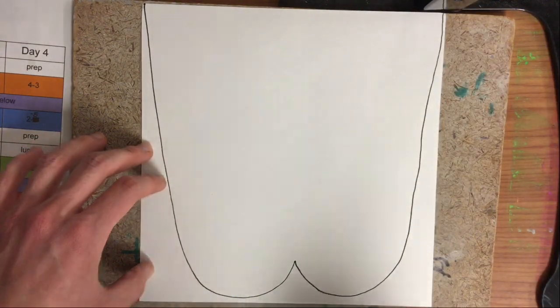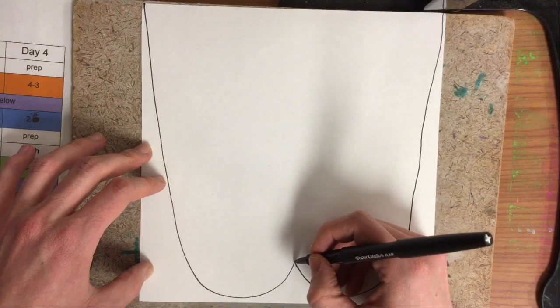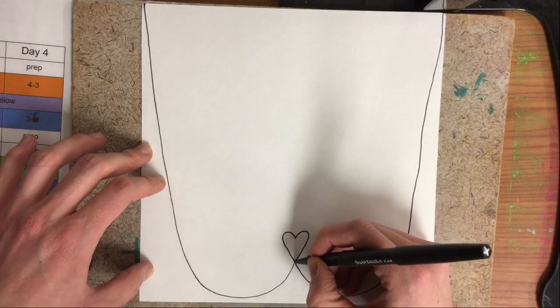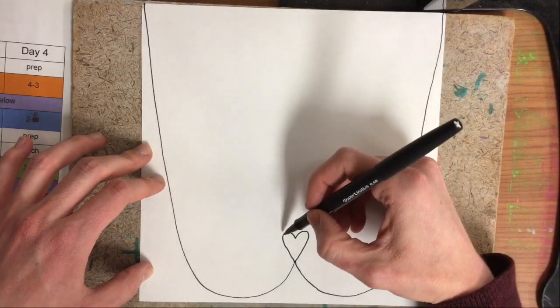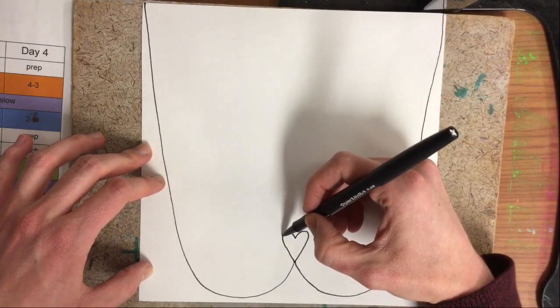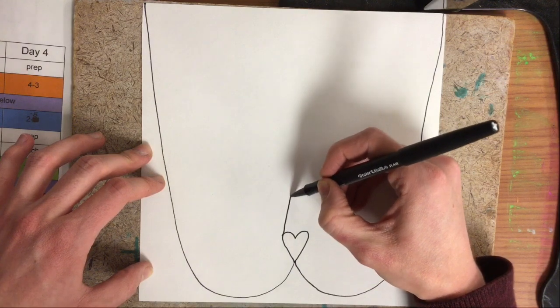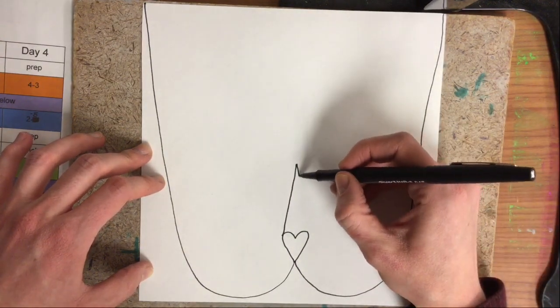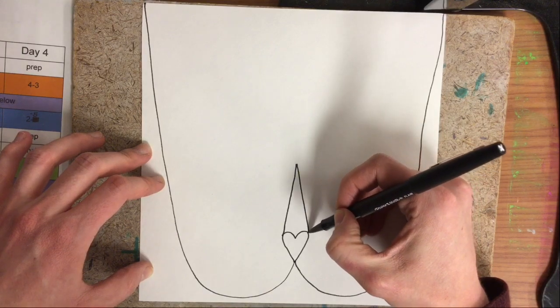Right down by that bump we're going to make a heart. That will be our cat's nose. Then we'll make a triangle point starting from one side of the heart, going up to about halfway up the face, and back down to the other side of the heart.